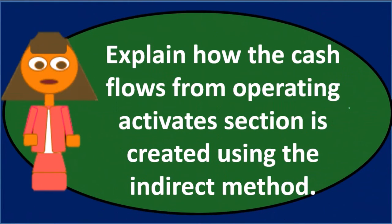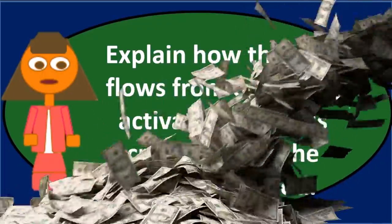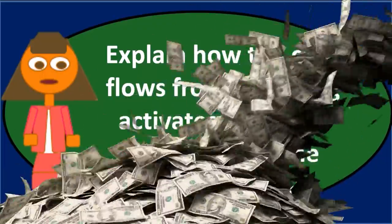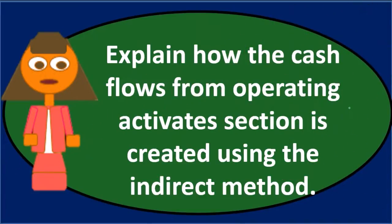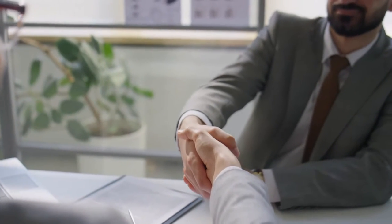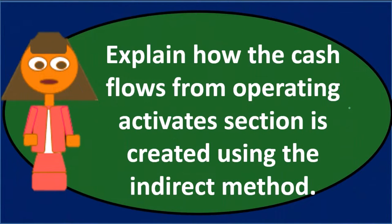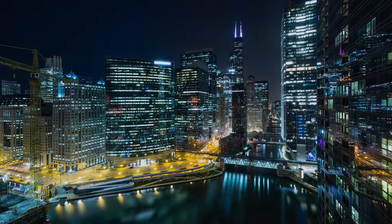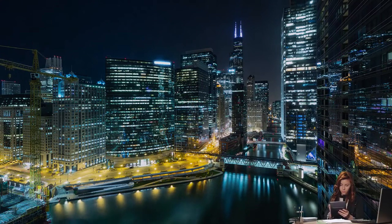The indirect method is actually preferred or even required in many cases — not because it's more intuitive, since the direct method is probably easier to explain to investors. Rather, the indirect method serves as a reconciliation, reconciling net income on an accrual basis to a cash basis. It starts with net income as the first line item of operating activities.